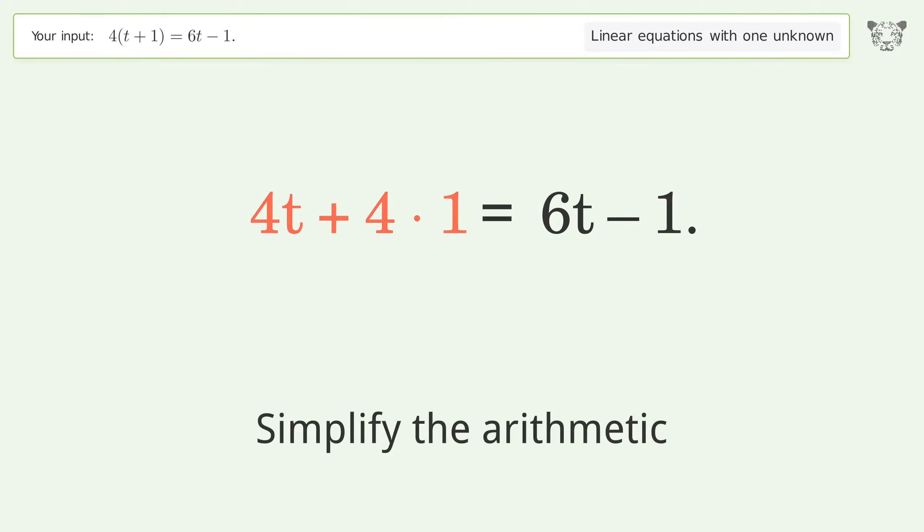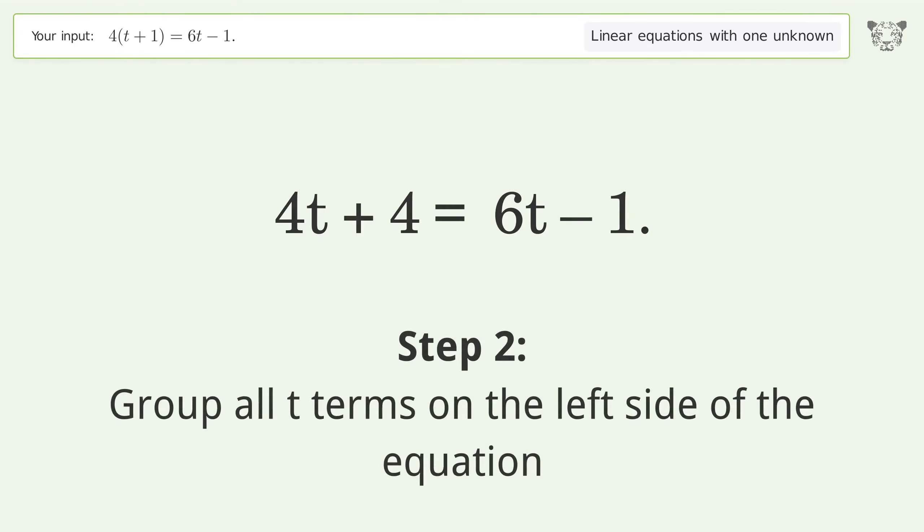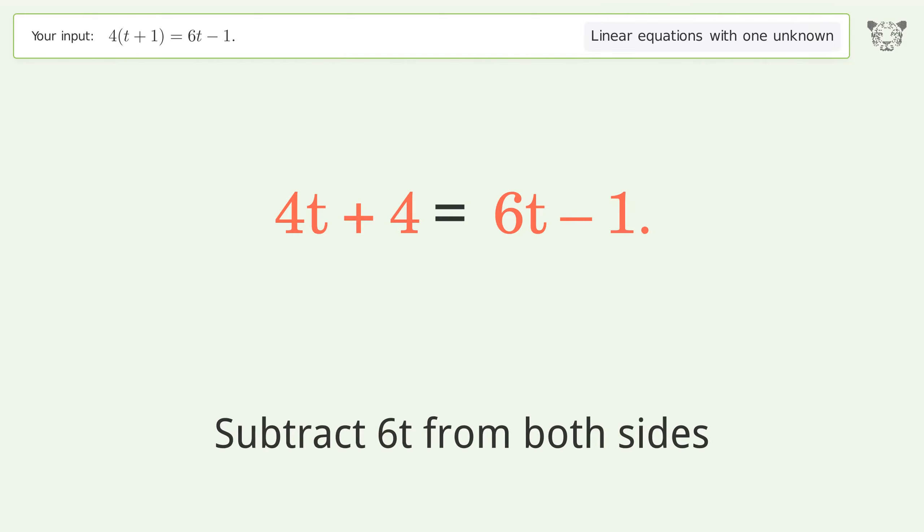Simplify the arithmetic. Group all t terms on the left side of the equation. Subtract 6t from both sides.